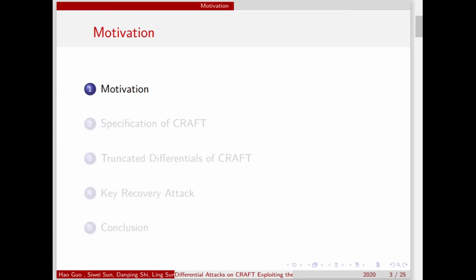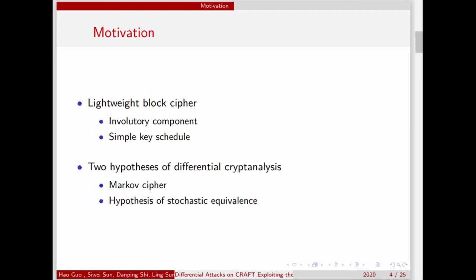First, we introduce our motivation. For most block ciphers with SPN structure, the decryption function is the inverse of the encryption function. In this case, we need two circuits to implement the encryption and decryption functions. While in many lightweight block ciphers, they use involutory components, which means the encryption function can be transformed to the decryption function with low cost. Besides, for lower power consumption, many lightweight block ciphers use very simple key schedules, and there are even no key schedules for some block ciphers. While these involutory and simple components may provide convenience for attackers.